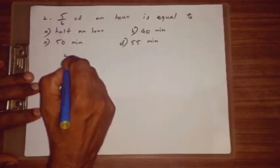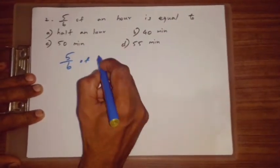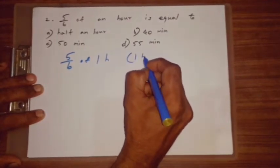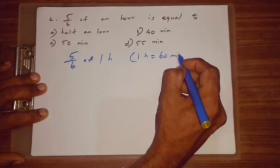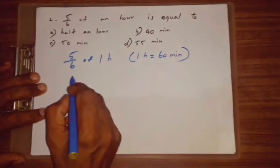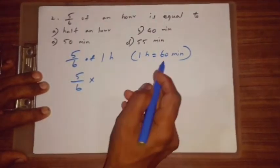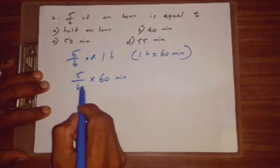5 by 6 of an hour. Means, 1 hour. So, 5 by 6 multiply 1 hour, 60 minute. 60 minute.